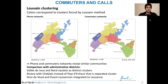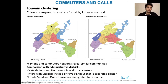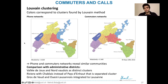We applied the Louvain clustering method to both the phone and commuter networks. The colors on the maps correspond to the clusters found by the Louvain algorithm. Globally, what we see is that phone and commuter networks reveal quite similar communities.